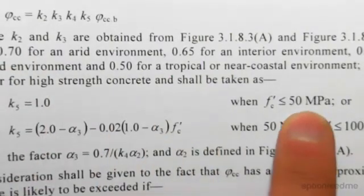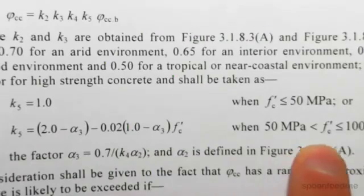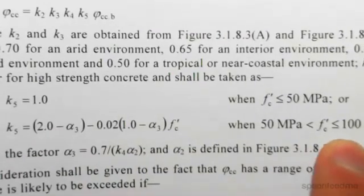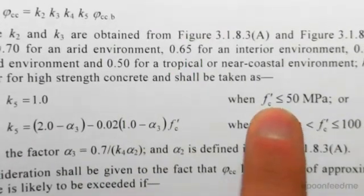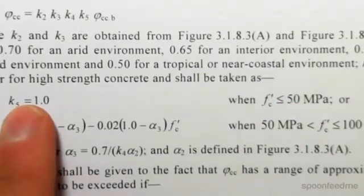You have k5 equals 1.0 when fc' is less than or equal to 50, or k5 equals this formula when fc' is between 50 and 100. For our case, fc' equals 50, so k5 is equal to 1.